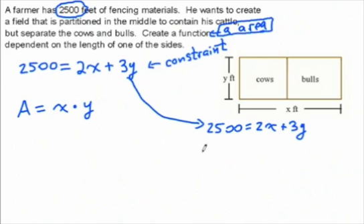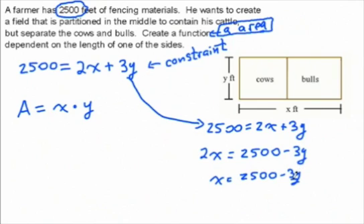Subtract 3y from both sides and then divide everything by 2, so we're going to get 2,500 minus 3y all divided by 2. That's perfectly fine. If you want, you can separate it—you can do the 2,500 divided by 2.